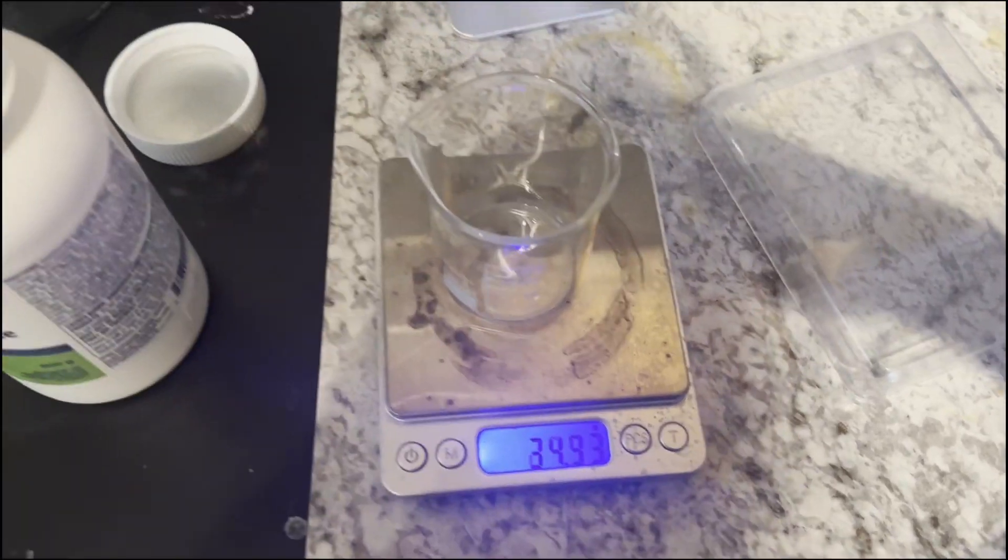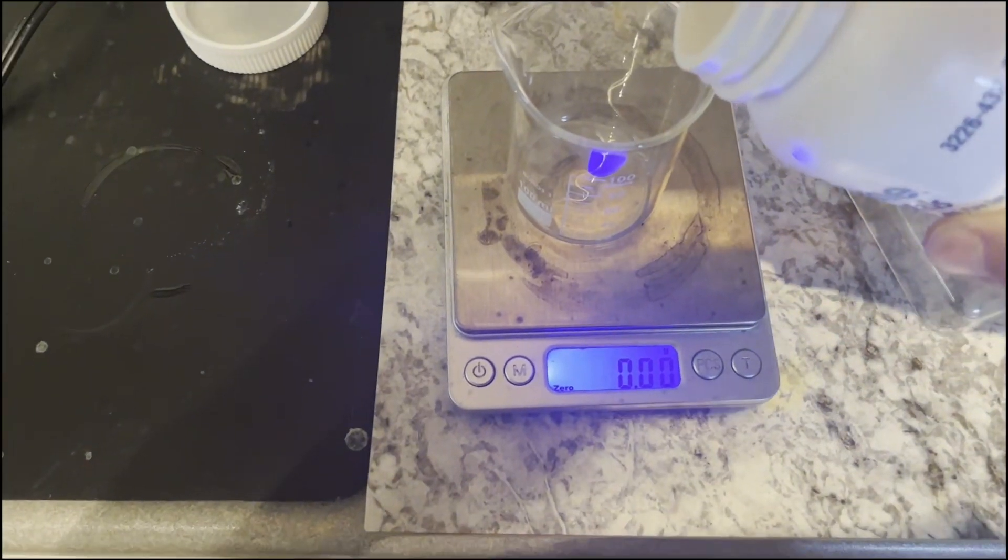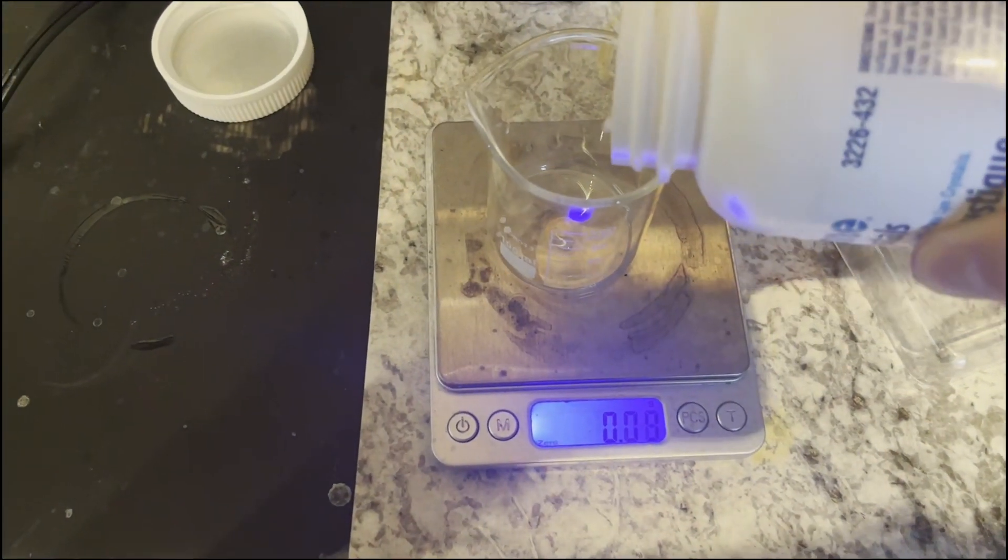The old beaker was put into a freezer and a new beaker was placed on a scale. 55 grams of sodium hydroxide was then weighed out and put off to the side.